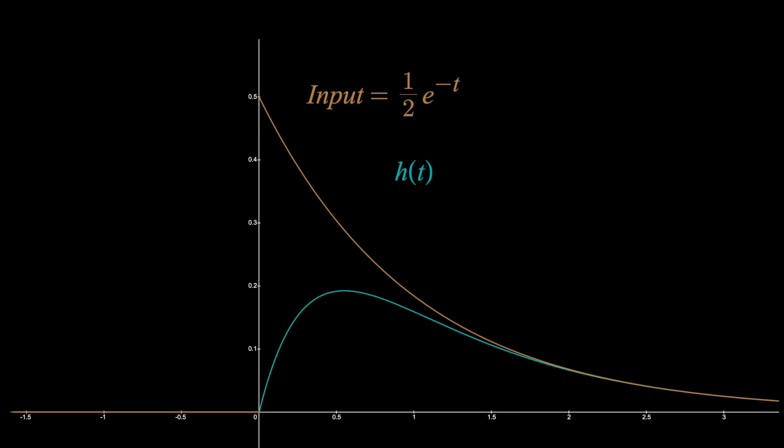Now to find the output, what we do is first reflect the impulse response over the y-axis, and then we're going to slide it to the right.